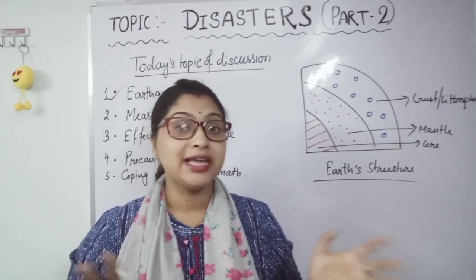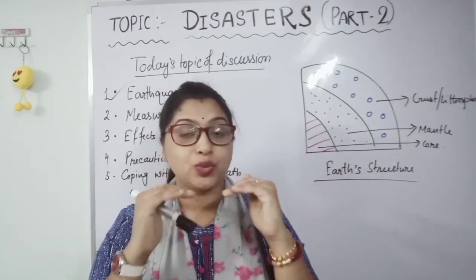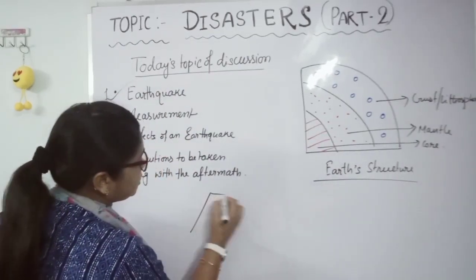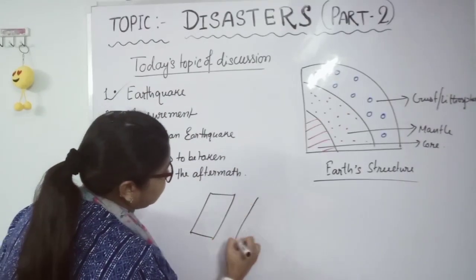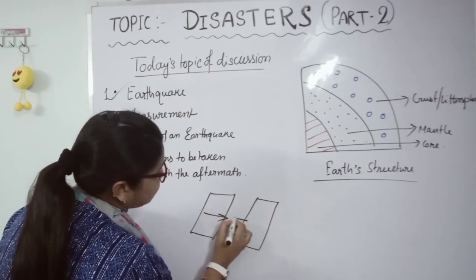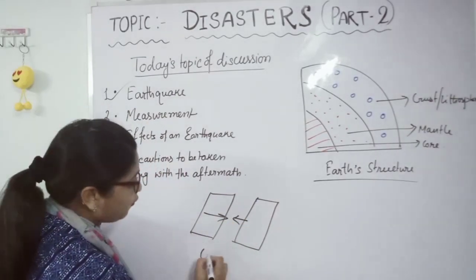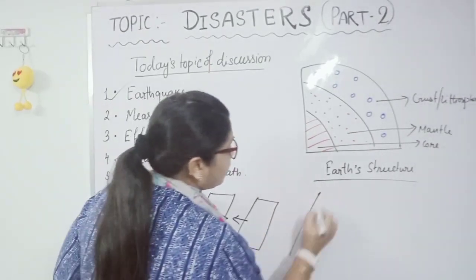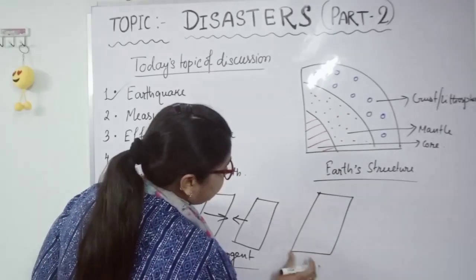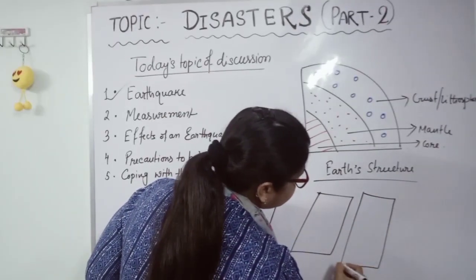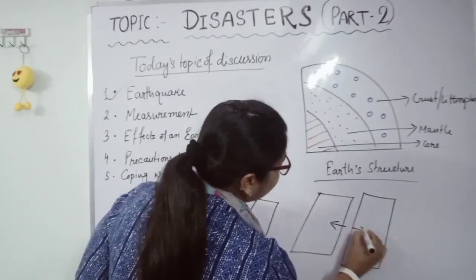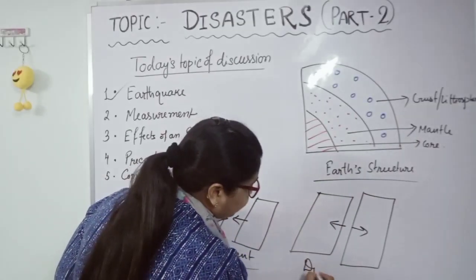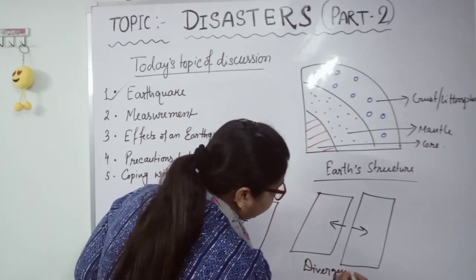This lithosphere layer is basically made of seven major plates and many minor plates. These plates tend to move towards each other or in opposite directions. Suppose this is one plate and another plate is here — they sometimes move towards the same direction and form a converging or convergent boundary. When the two plates move in different or opposite directions, that is known as a divergent boundary.